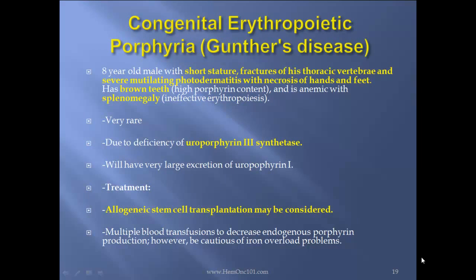Congenital erythropoietic porphyria — Gunther's disease — case report: 8-year-old male with short stature, fractures of his thoracic vertebrae, and severe mutilating photodermatitis with necrosis of hands and feet. Has brown teeth due to high porphyrin content, and is anemic with splenomegaly due to ineffective erythropoiesis. This is very rare and is due to deficiency of uroporphyrinogen 3 synthase, allowing very large excretion of uroporphyrin 1 levels. Treatment: consider allogeneic stem cell transplants and blood transfusions as needed.